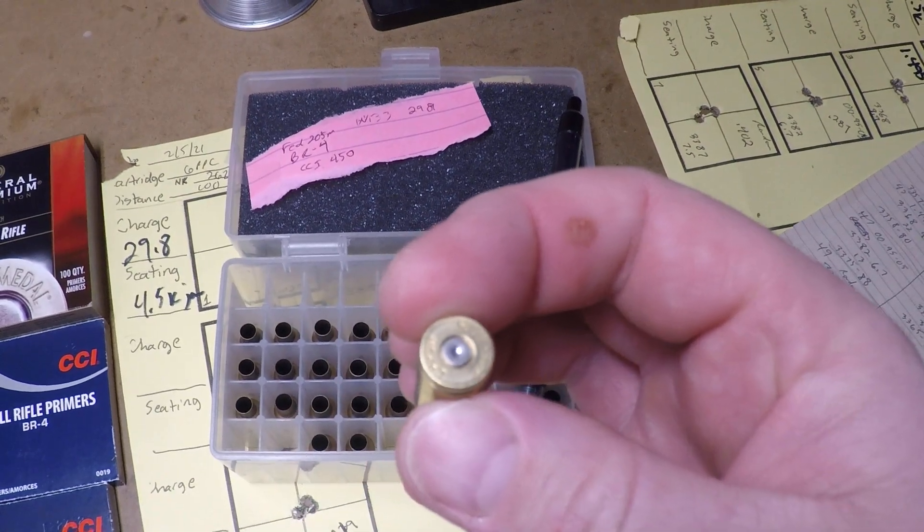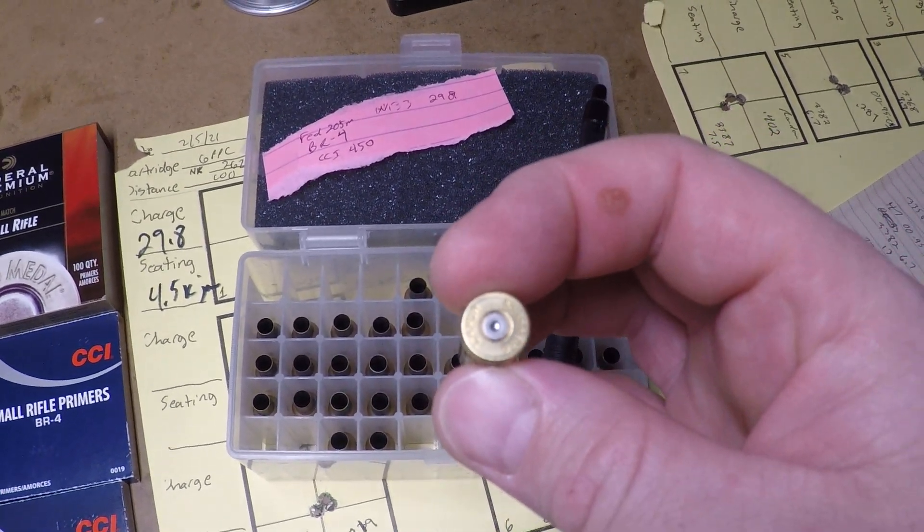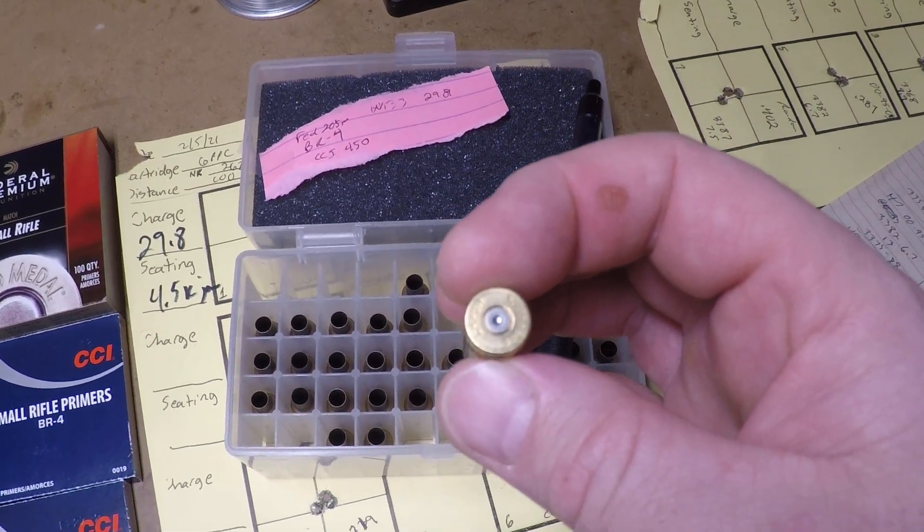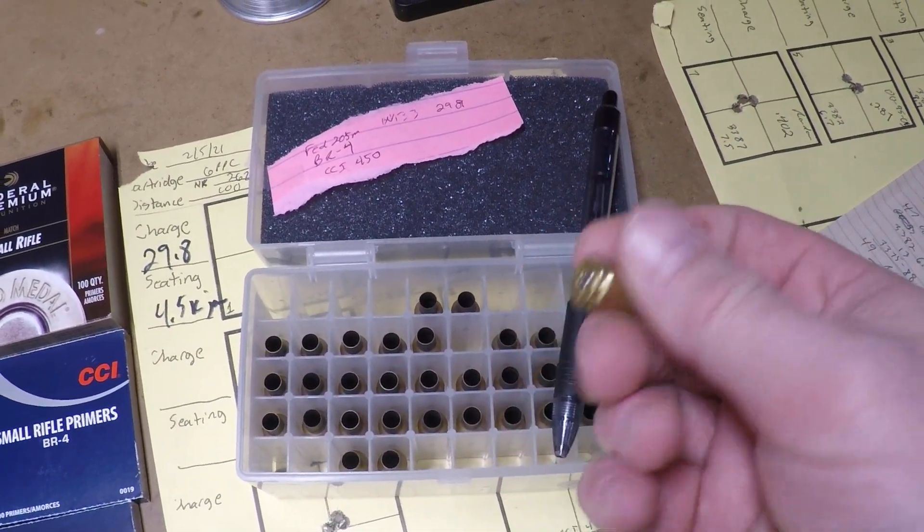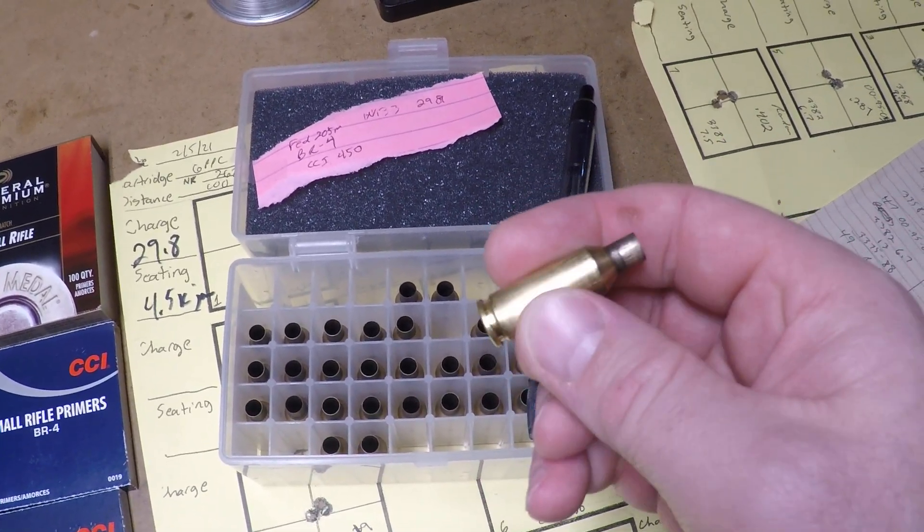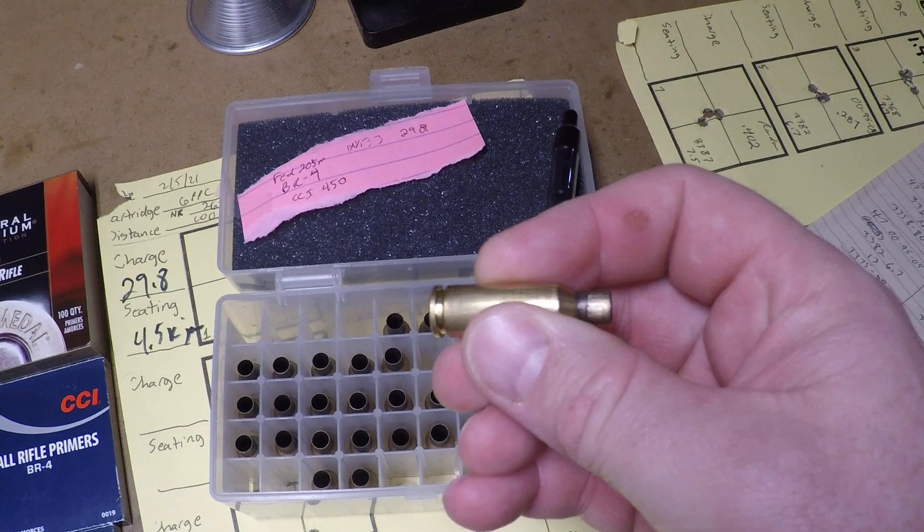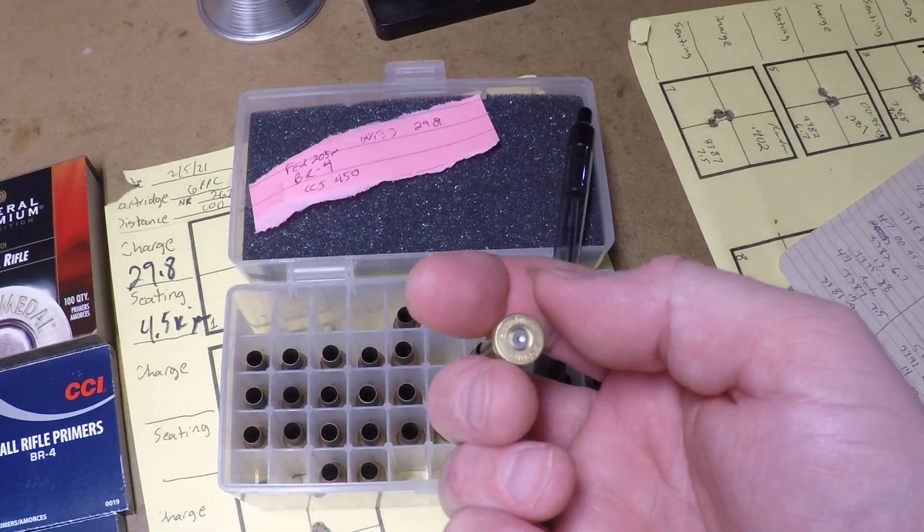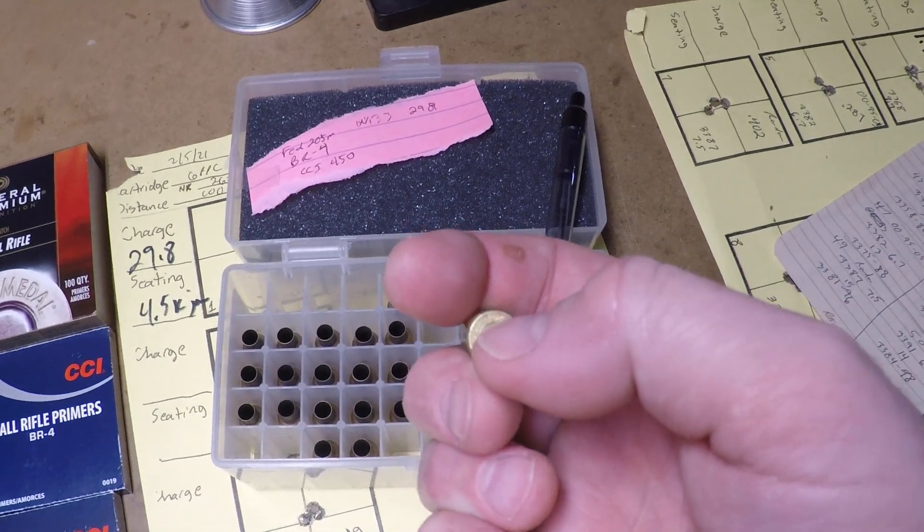There's a little bit of swipe on this case, but that swipe was actually there prior to doing this testing. So, this was very consistent with the rest of the cases. They all had a little bit of a swipe. I think I tested these cases with a stout load of N133, probably 30.3 or so at one point, and that's what led to the swipe.